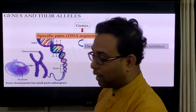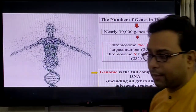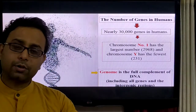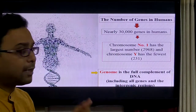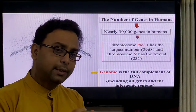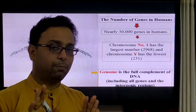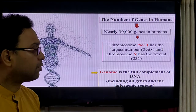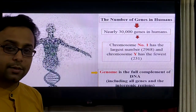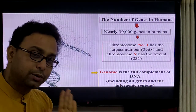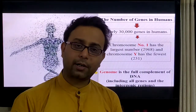An important question: how many genes are present in humans? After the Human Genome Project, we found that there are nearly 30,000 genes present in humans — in every cell, 30,000 genes, each with a specific function.